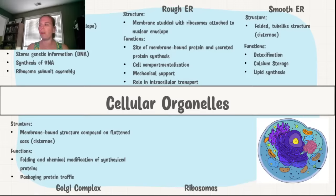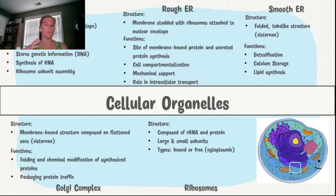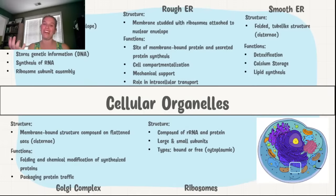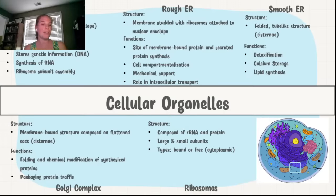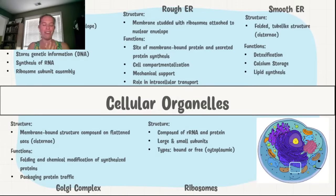Ribosomes are made up of two parts: a large subunit and a small subunit. The small subunit is where the mRNA binds, and the large subunit is where the tRNA comes in. The large and small subunits work together to translate that mRNA — reading it and synthesizing the amino acid chain, which is your polypeptide. We can find ribosomes either bound or free. They all start out as free ribosomes, and once given a signal, they travel to the rough ER to finish synthesis of the protein in or on the membrane surface. Ribosomes are made up of RNA and proteins.